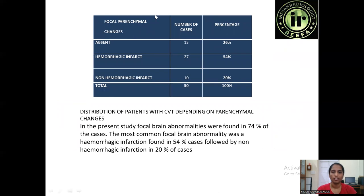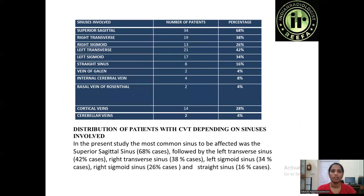Distribution of patients with CVT depending on parenchymal changes: in the present study, focal brain abnormalities were found in 74% of cases. The most common focal brain abnormality was hemorrhagic infarction, found in 54% of cases, followed by non-hemorrhagic infarction in 20% of cases. This chart shows distribution depending on the sinuses involved. The most common sinus affected was the superior sagittal sinus, followed by the left transverse sinus accounting for 42%, the right transverse sinus accounting for 38%, and the left and right sigmoid sinuses.